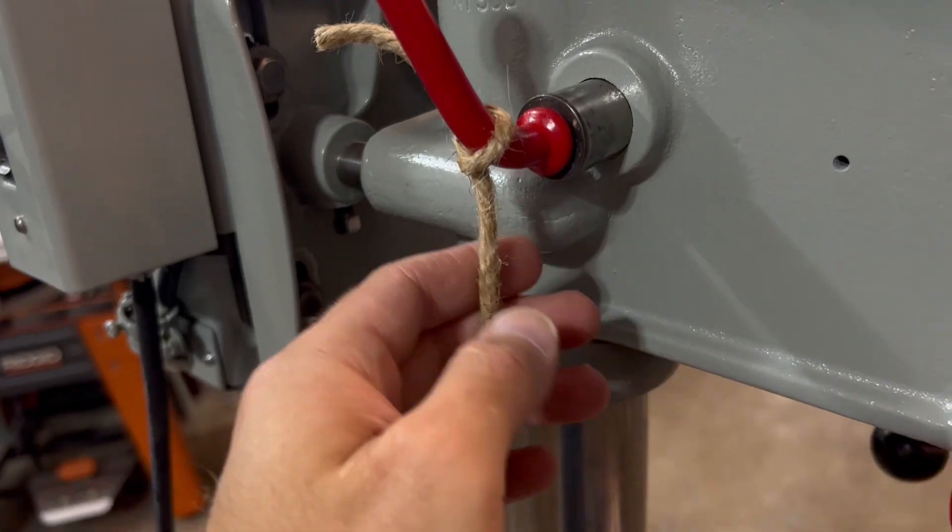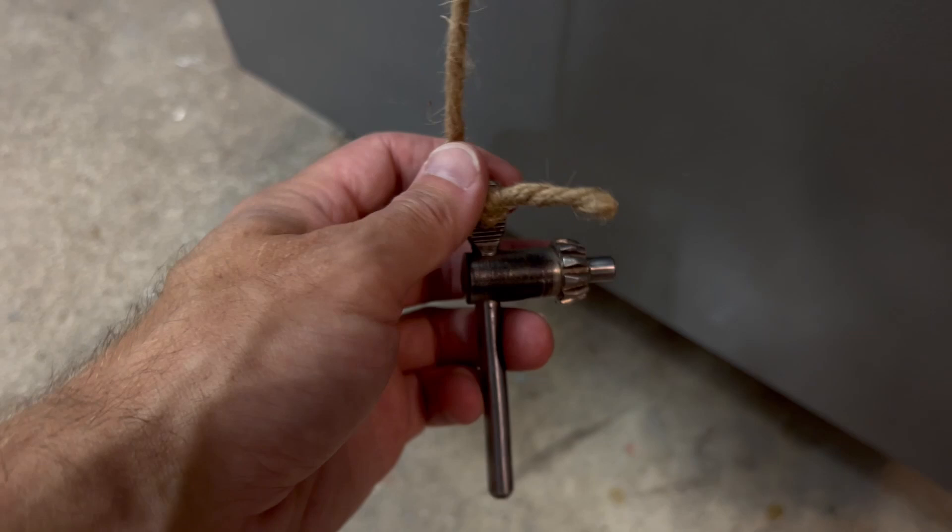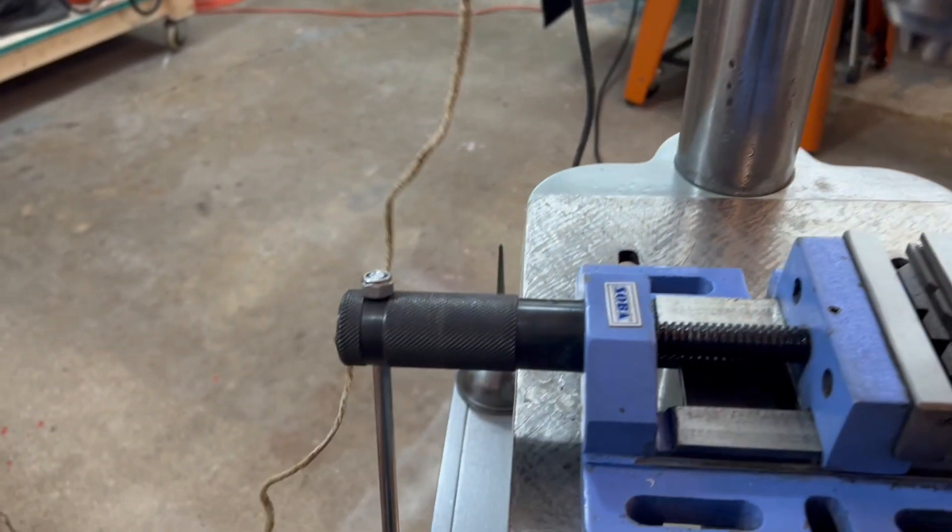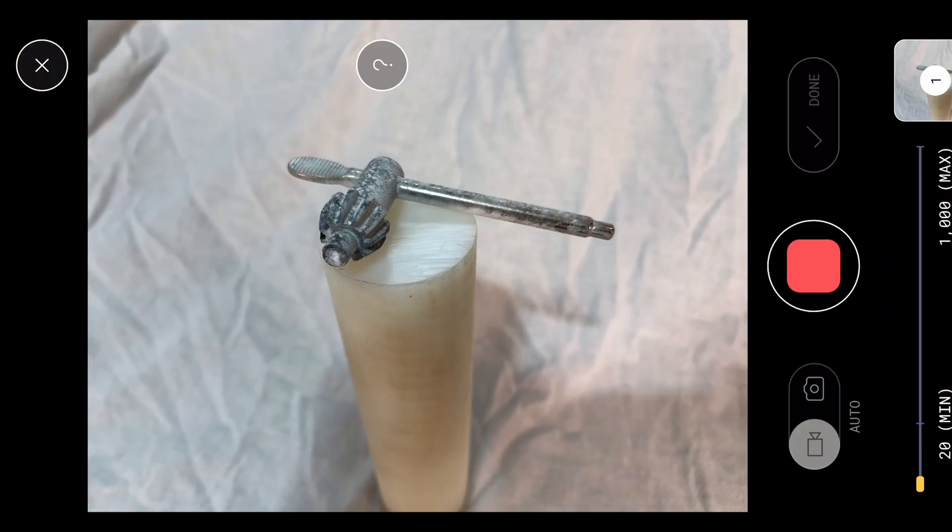Now some people like to use a string or fishing line and drill a hole through the key, but I think strings and fishing lines around spinning tools don't get along too well. So let's get this going.